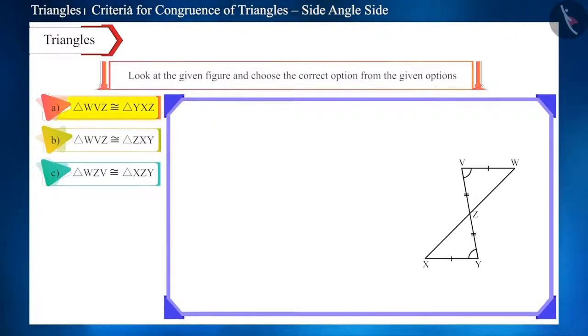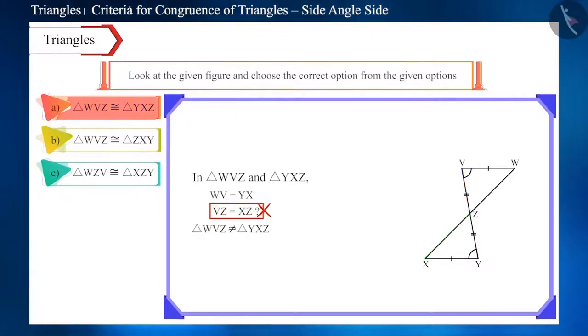Friends, according to the first option here, side WV is equal to side YX. Look in the figure and tell whether it is correct. Yes. Now, can you tell whether side VZ is equal to side XZ? No. Therefore, these triangles cannot be congruent. So, the first option is not correct.